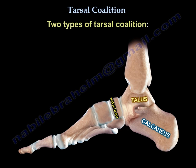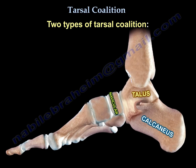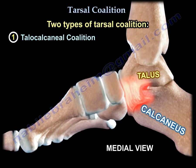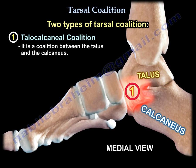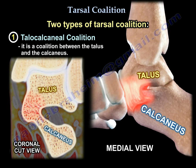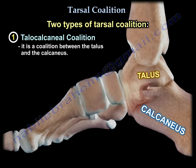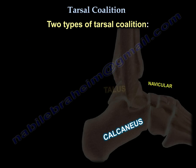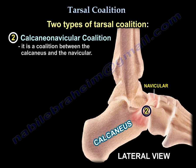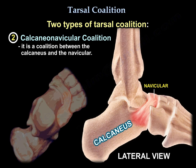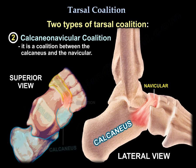There are two types of tarsal coalitions. First, a talocalcaneal coalition, which is a coalition between the talus and the calcaneus. A coronal cut through the talus and calcaneus shows the coalition as seen on the left. The second type is a calcaneonavicular coalition, which is a coalition between the calcaneus and the navicular.